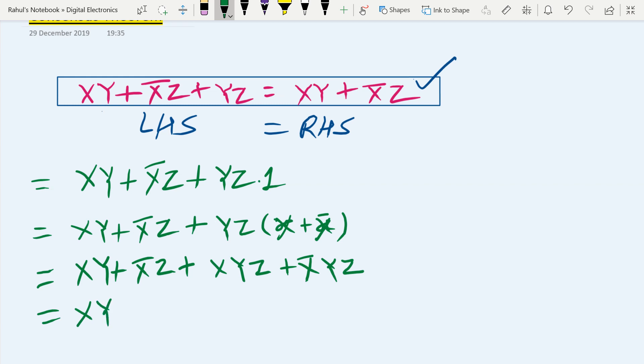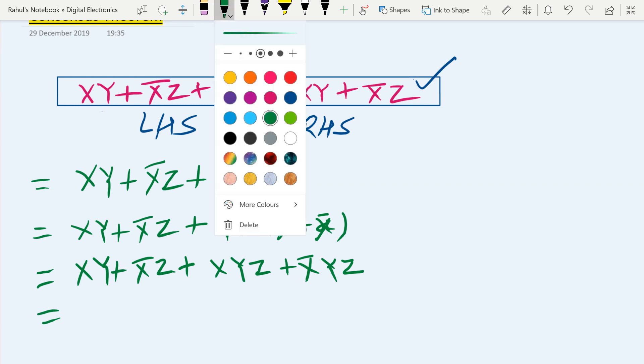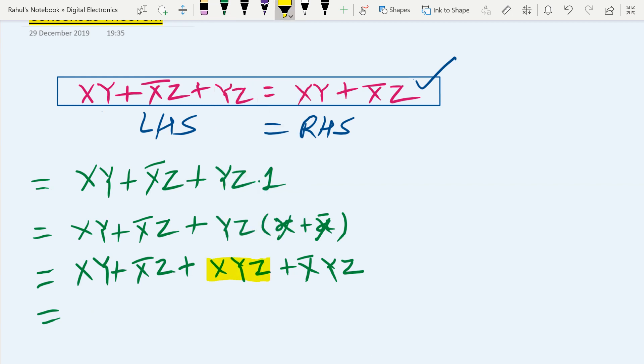xy we are remaining as xy. So in this step you can observe that in xyz and in xy we can take x and y as a common part and write one plus z by using basic properties of switching algebra. We can also write x bar z and x bar yz as x bar z times one plus y.